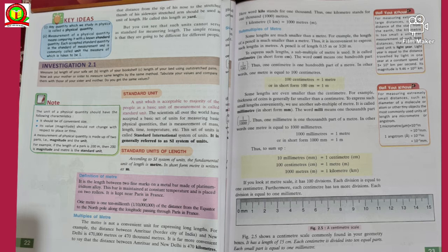So the unit of physical quantity should have the following characteristics: it should be of convenient size, its value that is magnitude should not change with respect to place or time. A measurement of physical quantity is made up of two parts, that is magnitude and the unit. For example, if the length of a park is 200 meters, then 200 is the magnitude and meter is the unit, and it is the standard unit. According to SI system of unit, the fundamental unit of length is meter. In short, meter is written, is denoted as m.